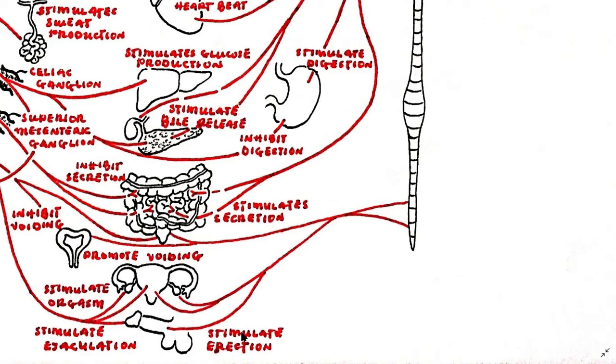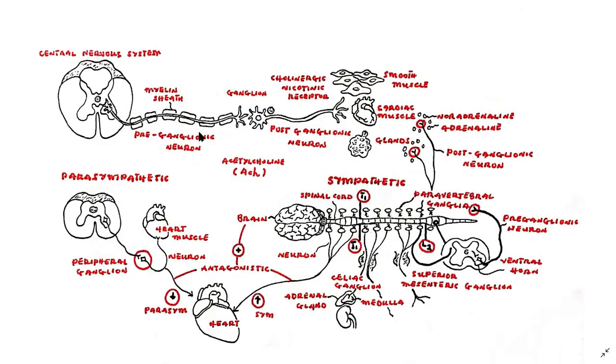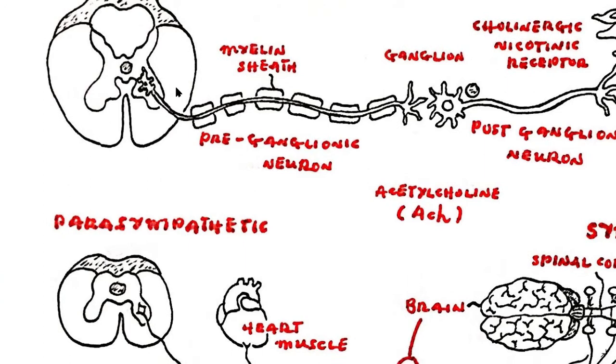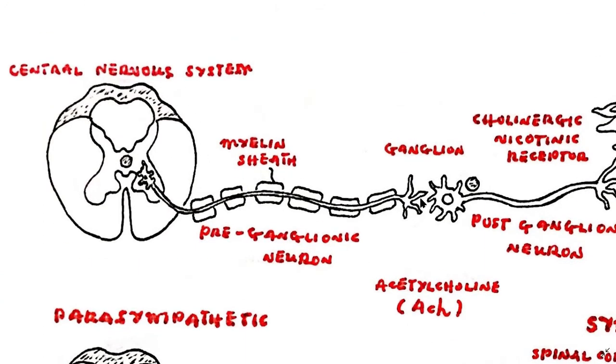Therefore it is commonly known as the rest and digest system. Both the sympathetic and parasympathetic systems contain preganglionic neurons originating in the central nervous system that synapse with non-myelinated postganglionic neurons in the peripheral ganglia.